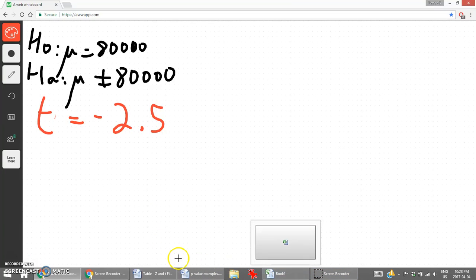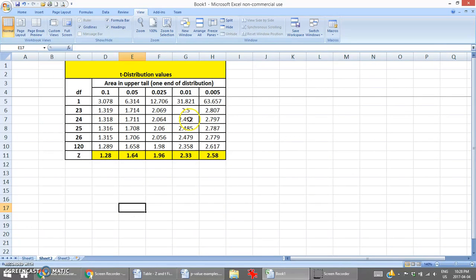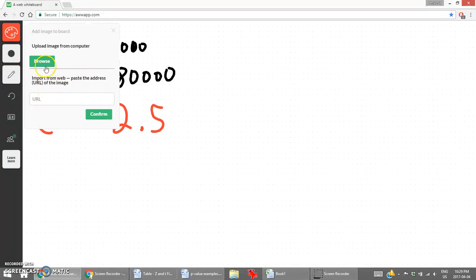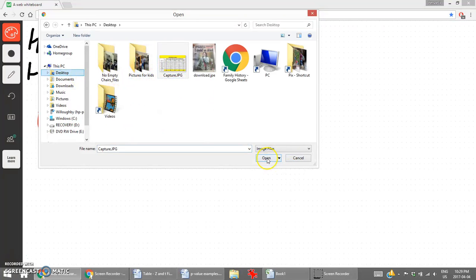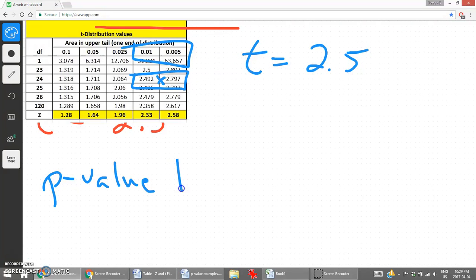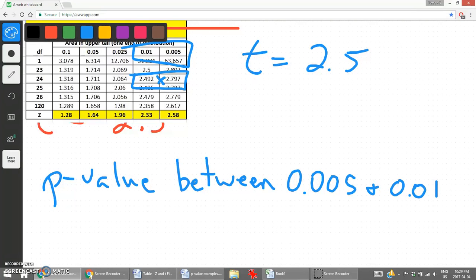So we go to our spreadsheet here. We know that the 2.5 is going to be somewhere between those two values, 2.492 and 2.797. There is our t distribution values. We know that t value of 2.5 is going to be somewhere between here. Similar to the other example we worked on. So we know that the p-value is going to be somewhere between there. P-value is between 0.005 and 0.01. However, because this is a two-tail test.